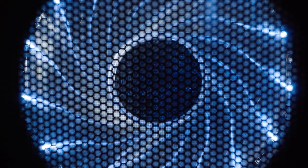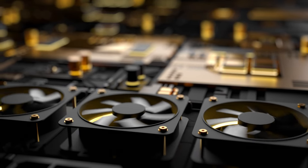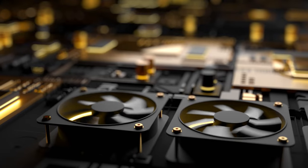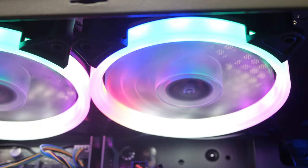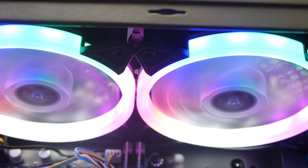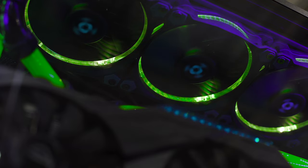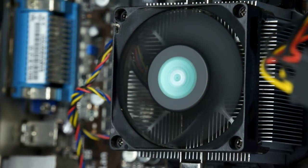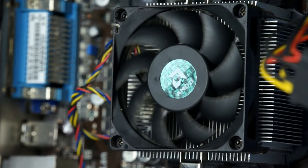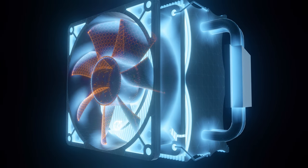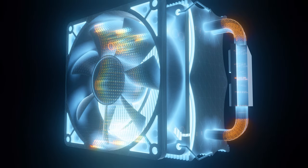Computer fans are an essential component that help to regulate the temperature of internal components by removing heat generated during operation. Heat can be detrimental to the performance and lifespan of computer components, so cooling is necessary. There are two main types of computer fans: intake and exhaust. Intake fans are typically located on the front or bottom of the case and bring cool air in, while exhaust fans are located at the top or rear and expel hot air out. Fans operate by spinning rapidly, drawing air through the case and over the internal components, carrying away heat.